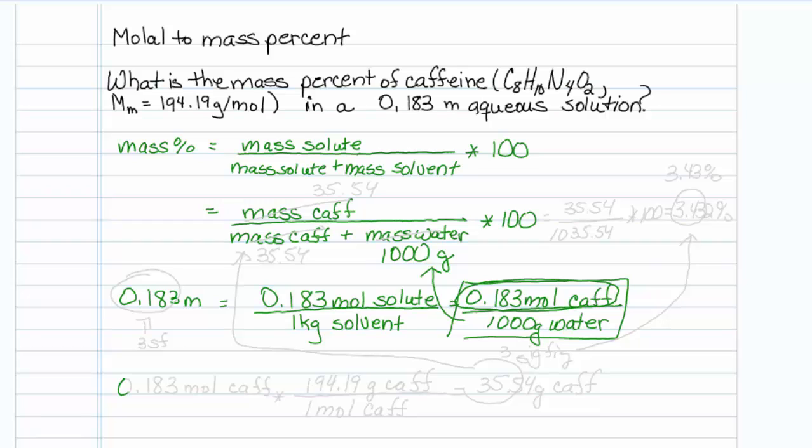So if I take 0.183 moles of caffeine and I multiply it by the molar mass, 1 mole of caffeine is equal to 194.19 grams of caffeine, I'll multiply that out, and it turns out that I have 35.54 grams of caffeine.